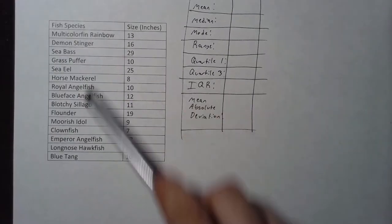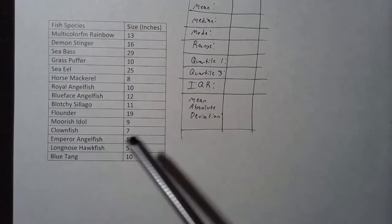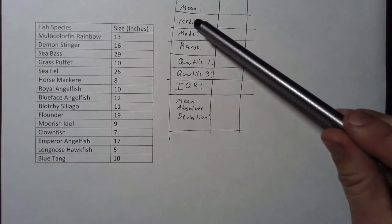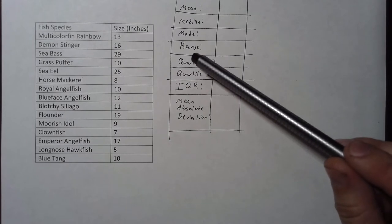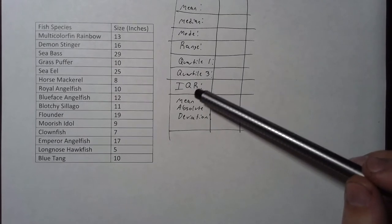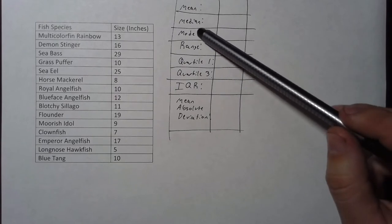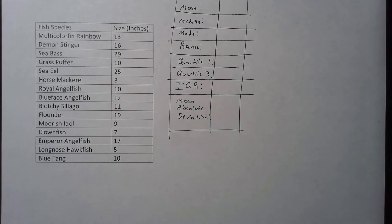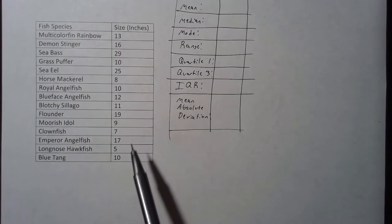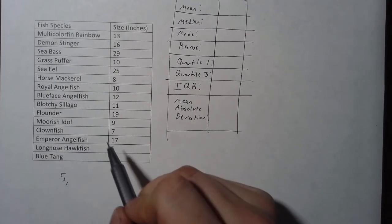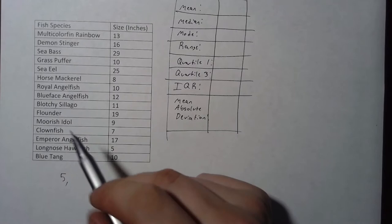First of all, whenever you are given a set of data, it's always a good idea to rewrite them from least to greatest. It's going to help with finding the mean and the quartiles, which means it's also going to help with the interquartile range. And it'll help you identify any repeating numbers and certainly help you find the smallest and largest number. So from least to greatest, the smallest fish was the long-nosed hawkfish.